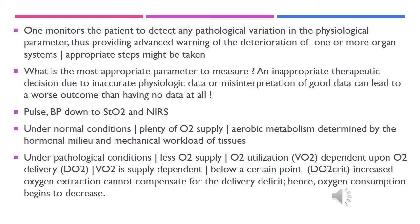Under normal circumstances there is plenty of oxygen supply to most of the tissues, and therefore aerobic metabolism is determined by the hormonal milieu and even the mechanical workload of the tissues. In pathological situations there is a lesser amount of oxygen supply, and the utilization of oxygen becomes completely dependent upon the delivery of oxygen — that is, utilization is supply dependent.